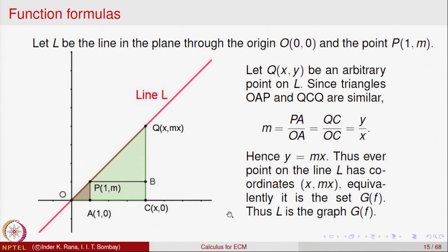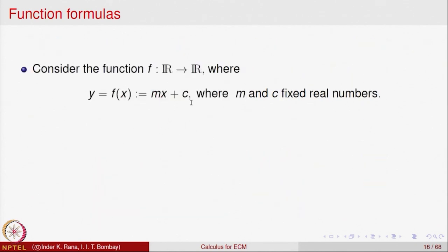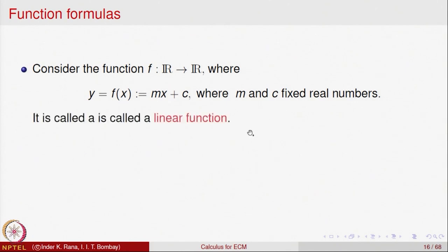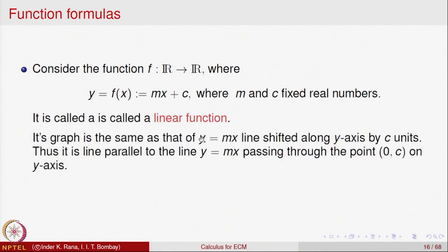We can go slightly ahead and look at the function given by y equal to mx plus C. Comparing with the previous function, for every value of x, whatever was mx, C is added to it. That means the y-coordinate is being translated by C units. The graph of this linear function is nothing but the graph of the line y equal to mx shifted along the y-axis by C units.